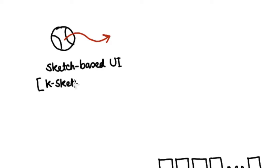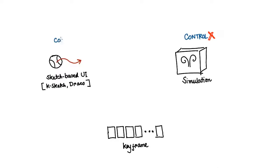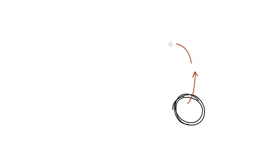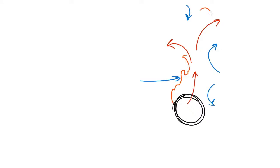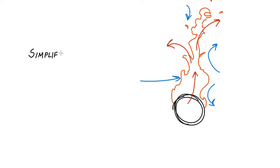Sketch-based interfaces make animation easy and accessible but they do not exhibit the time-varying nature of elemental dynamics. In contrast, a classical design approach to hand-drawn effects is to sketch energy strokes that coarsely define the underlying forces. This approach helps to simplify complex dynamics into smaller, understandable energy sources, stylize and exaggerate the effects, and preserve the fluidity of sketching.